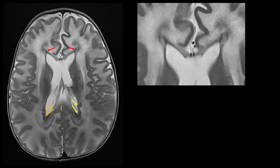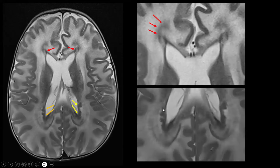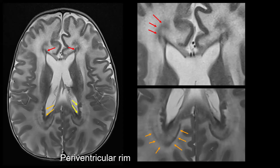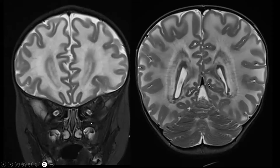We have periventricular abnormalities, but also another rim located a bit more in the paraventricular white matter — still near the ventricles but no longer making contact with them. We see this both frontally and posteriorly. So we have periventricular T2 hypointense abnormalities in direct contact with the ventricles, and paraventricular rims which run parallel to the ventricles but make no contact with them. On coronal images we can see part of the paraventricular and periventricular rim — the periventricular rim making contact with the lateral ventricle and the paraventricular rim running parallel to the posterior part of the lateral ventricles.